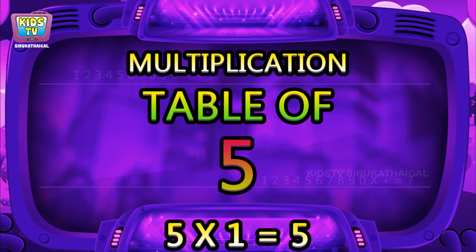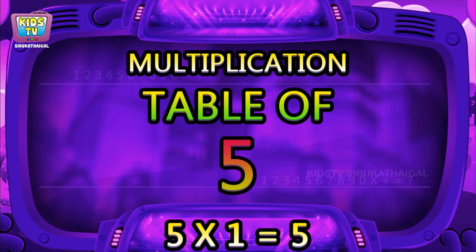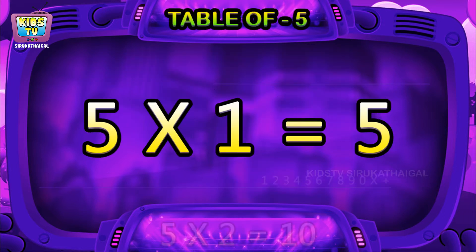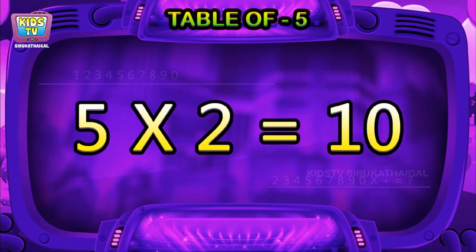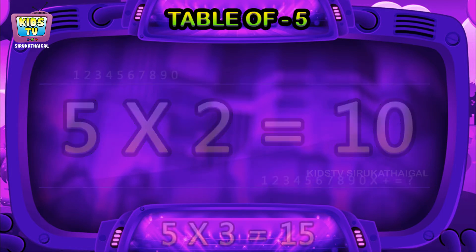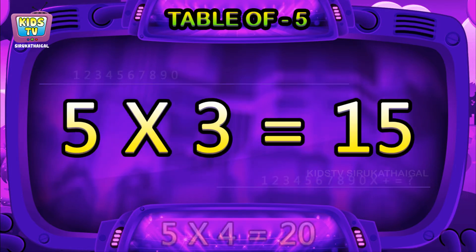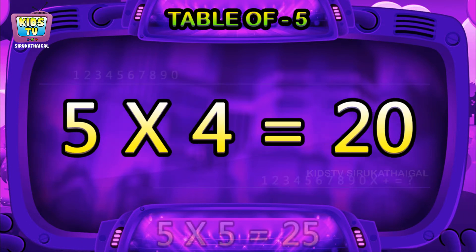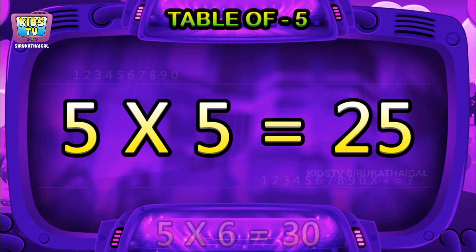Hi friends, now we will learn table of five. Five ones are five, five twos are ten, five threes are fifteen, five fours are twenty.